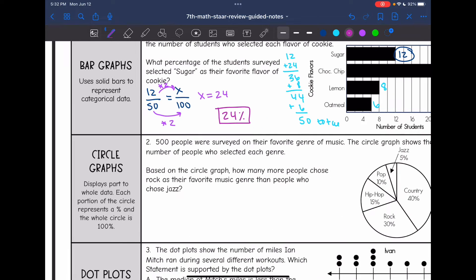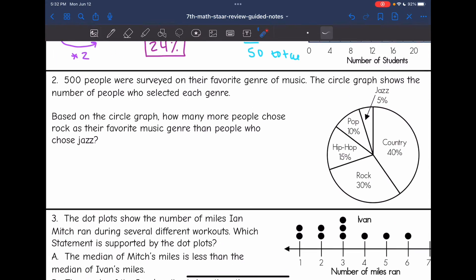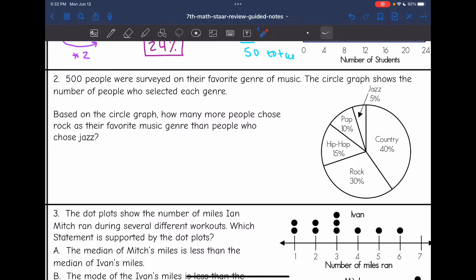Next we're going to look at circle graphs. Sometimes these are also called pie graphs. They display part to whole data. Each portion of the circle represents a percentage and the whole circle is 100%. So let's look at number 2. It says, 500 people were surveyed on their favorite genre of music. The circle graph shows the number of people who selected each genre.